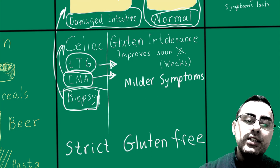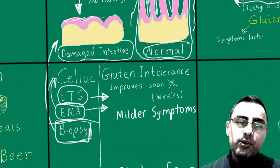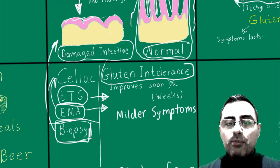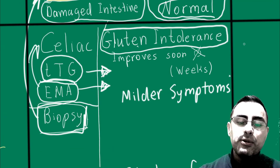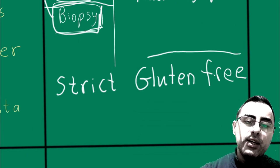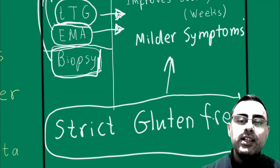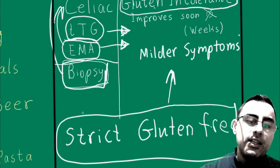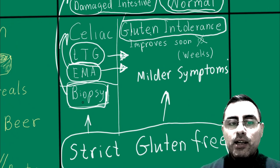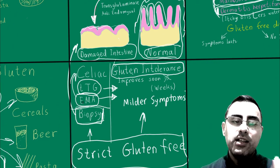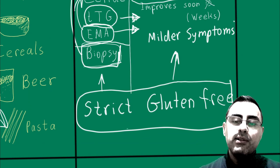Biopsy is critical to make the differential diagnosis. Gluten intolerance may have mild symptoms in many cases, but its symptoms can be severe as well. In both cases, the treatment is the same: a strict gluten-free diet. Symptoms improve faster in the case of gluten intolerance and slower in celiac disease. A person may also need vitamins and minerals due to malabsorption.